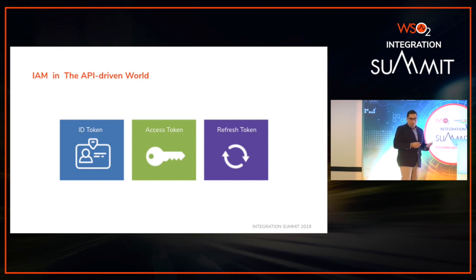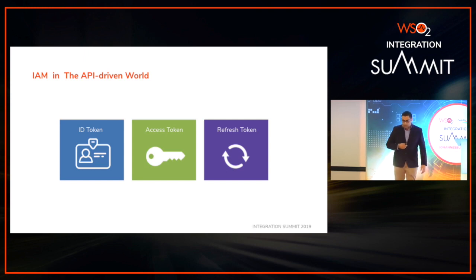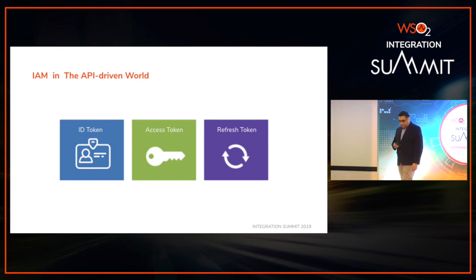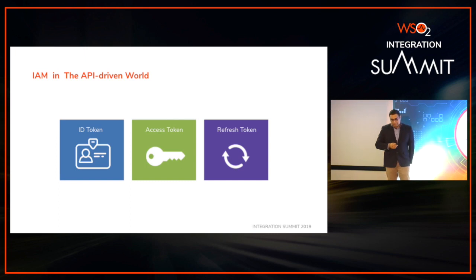Then you have a refresh token. Access tokens are used to grant access to APIs and protected resources temporarily, with a time limit attached. After that time the token expires and you can't use it. You need some way of obtaining another access token, and that's where the refresh token comes in — it prevents you from submitting your credentials over and over. Instead, you use your refresh token to ask for a new access token. This is how API security works at a high level.